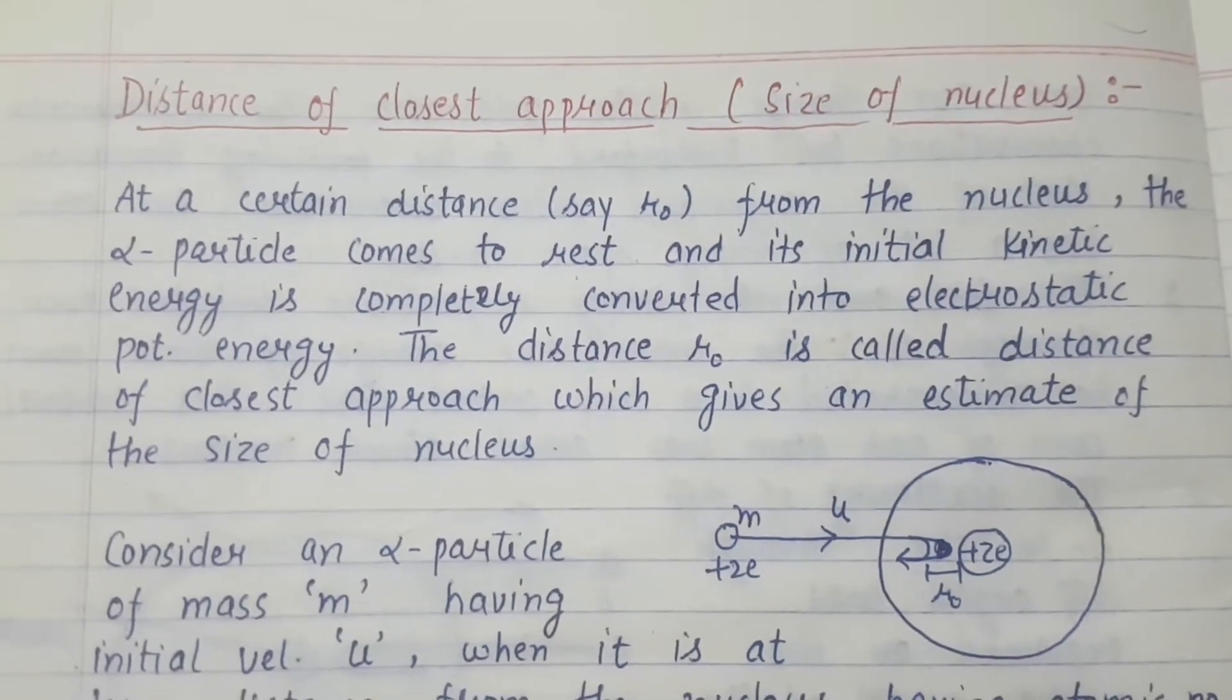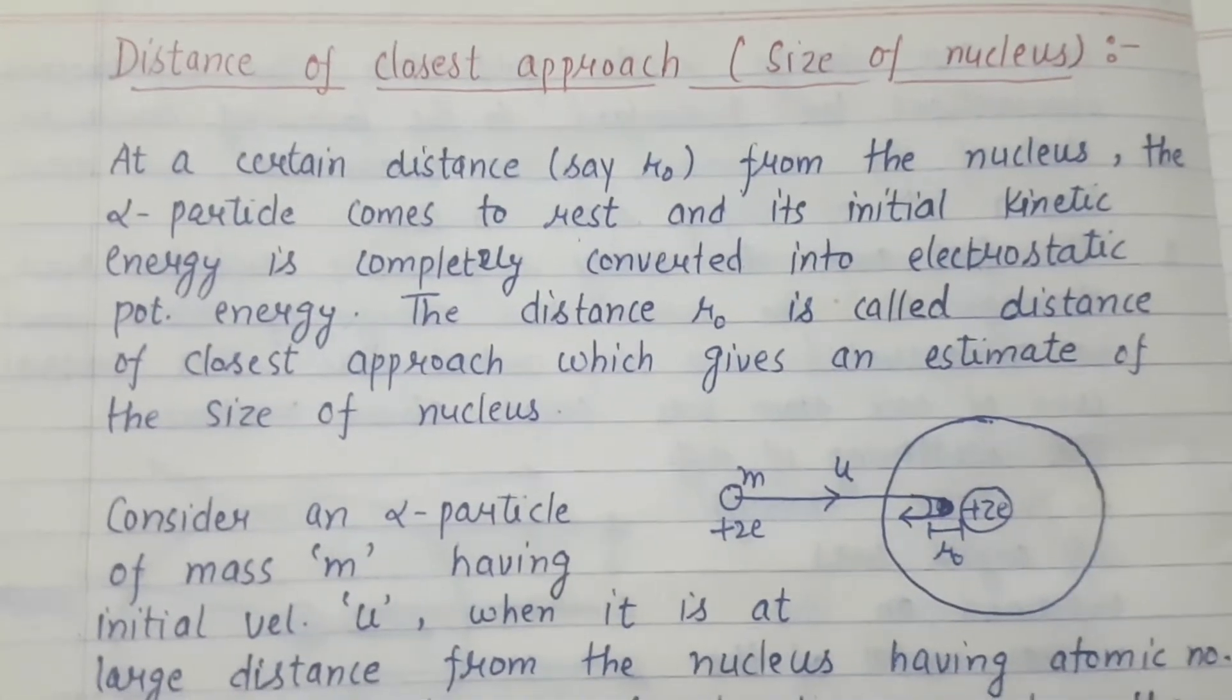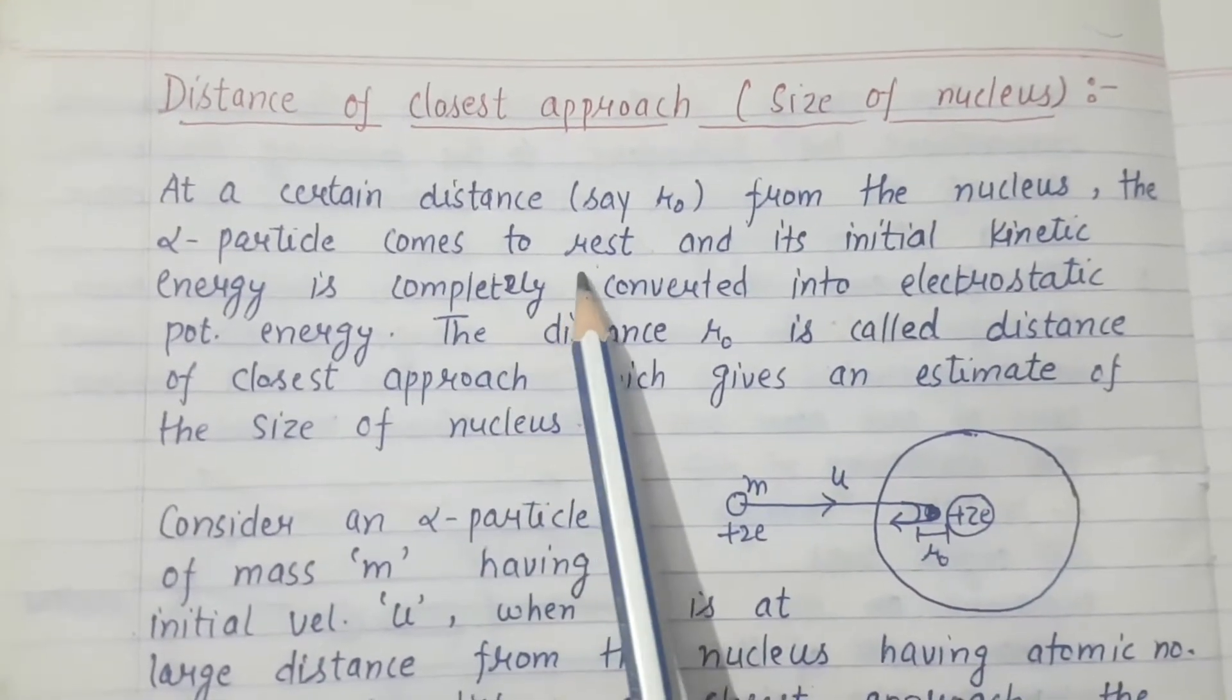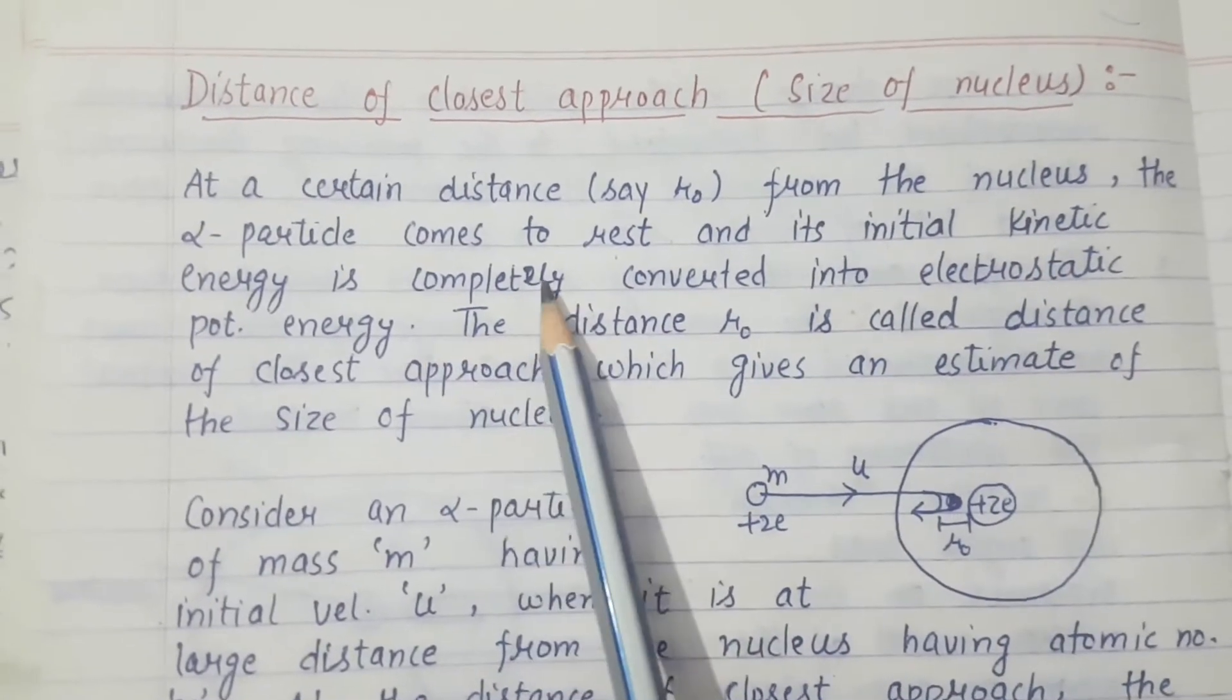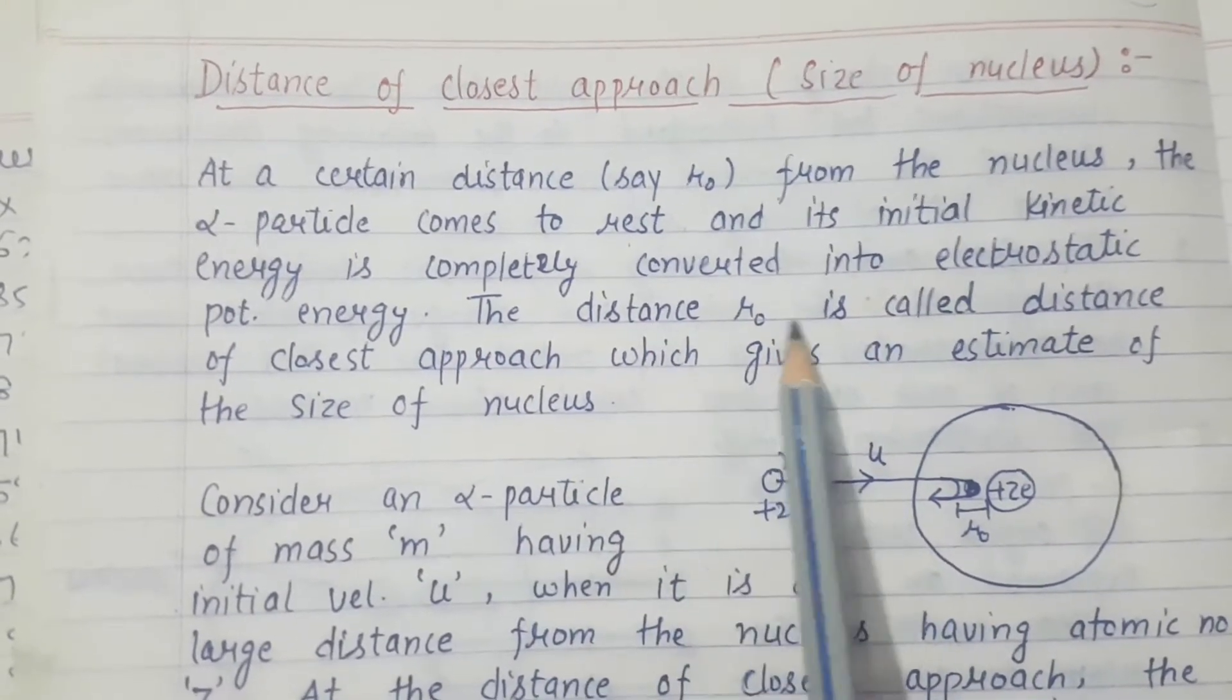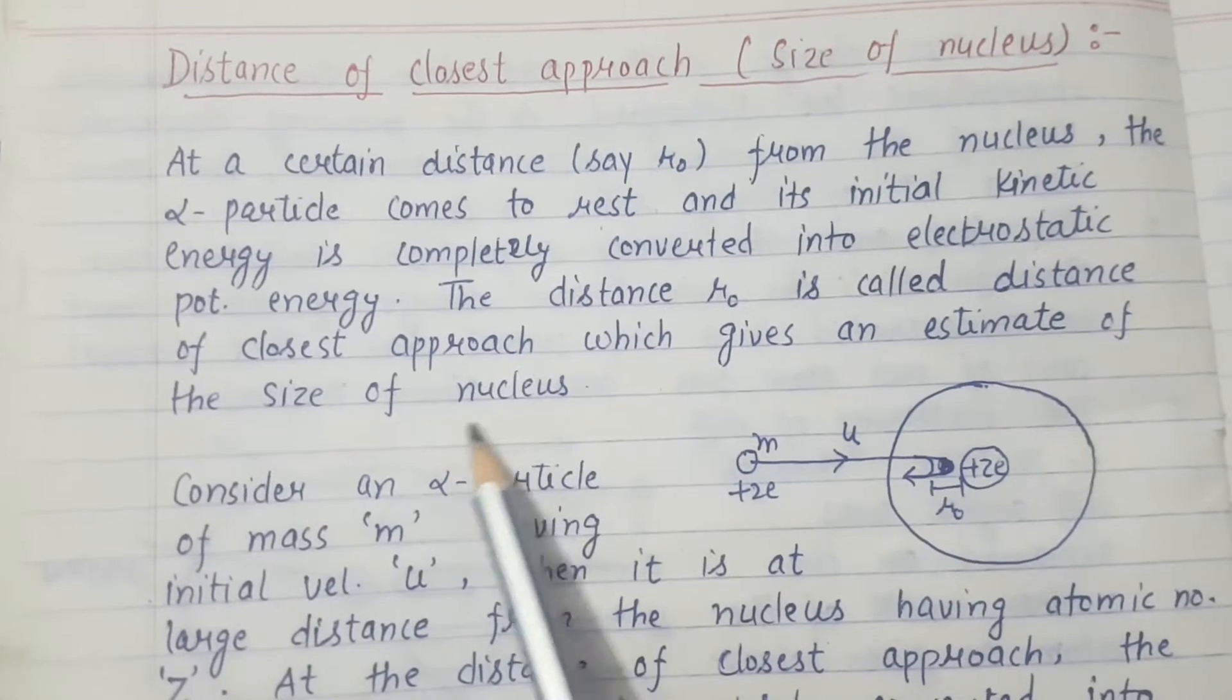Students, today in this lecture I am going to discuss the distance of closest approach. At a certain distance R0 from the nucleus, the alpha particle comes to rest and its initial kinetic energy is completely converted into electrostatic potential energy. The distance R0 is called distance of closest approach, which gives us an estimate of the size of nucleus.